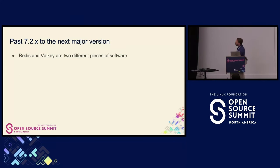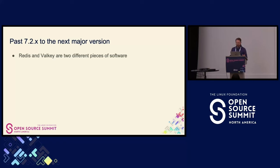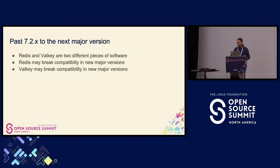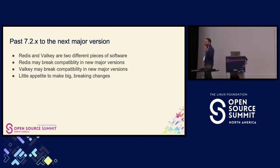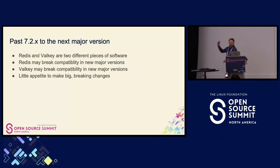Now past 7.2x — when we go into the next major version, from this point forward, Redis and Valky are two different pieces of software. At a major version, Redis may break compatibility with Valky and vice versa. From the Valky standpoint, Valky has very little appetite to make changes that are big and breaking. Valky is deeply integrated into pieces of software and making breaking changes would be very painful for users. We want to add to it instead of breaking it for everybody else.